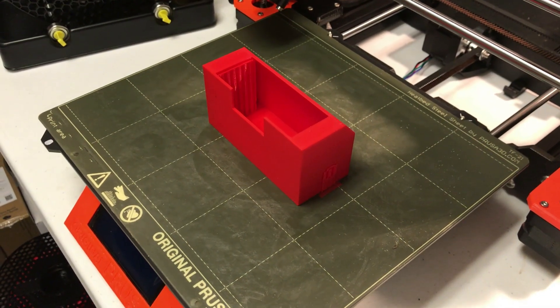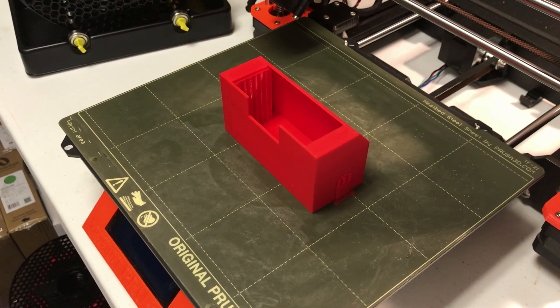So we'll take the part off the 3D printer and then we have to remove the support structure.